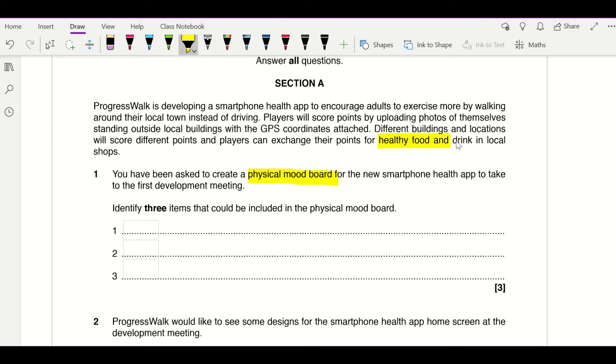If we look at here we talked about food and drink, and the fact it's all about taking photos, so we've got local buildings and it's going to be using photographs. It says you've been asked to create a physical mood board for the new smartphone app to take to the first development meeting. Identify three items that can be included in the physical mood board.